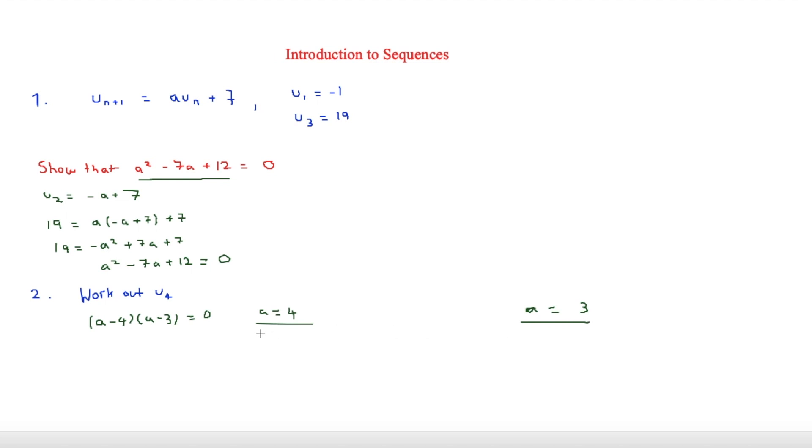So we'll start off with a is equal to 4. And all we have to do is sub this in. So we have to sub u3 in to this. And we know that it's 19. So this would be 19a plus 7. So we'll say that u4 is equal to 19a plus 7. And we know that a is equal to 4. So that means that u4 is going to be equal to 83.